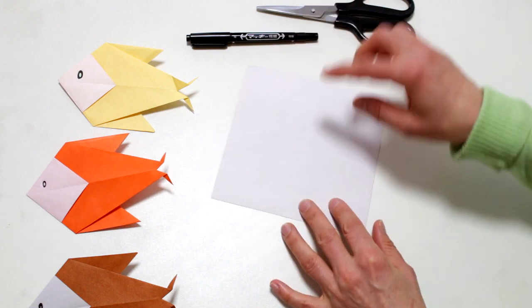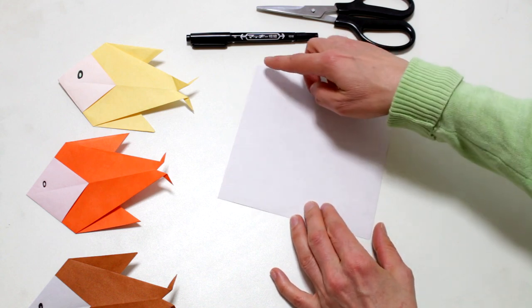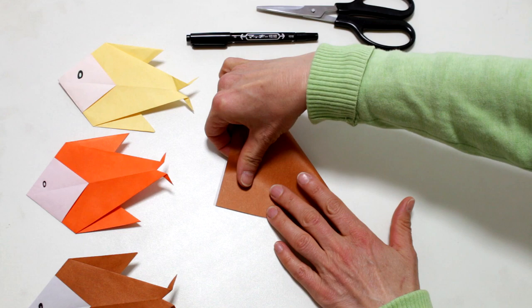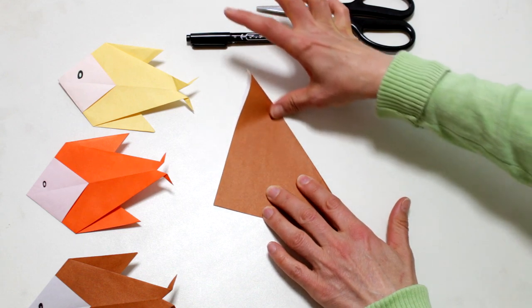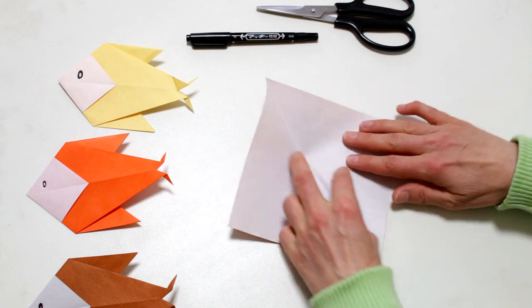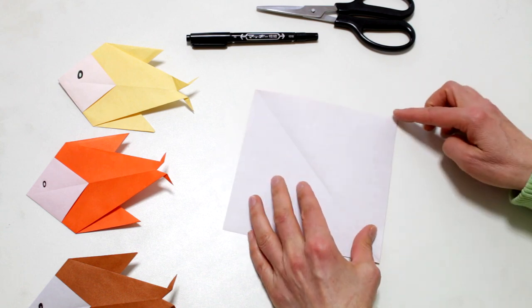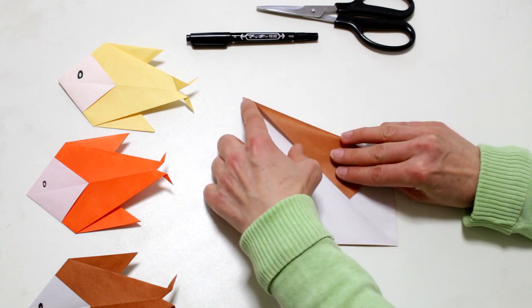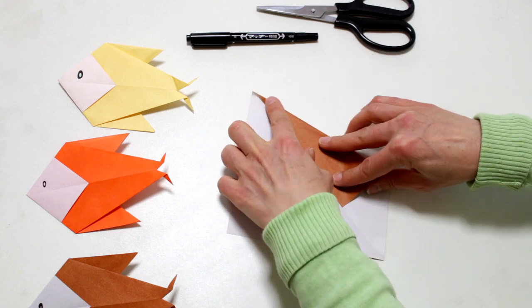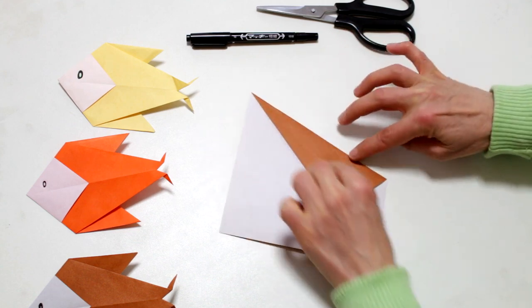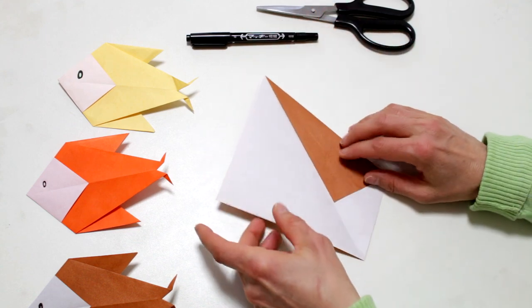We're going to start with the origami white side up and we're going to fold it in half diagonally. Crease and unfold and now we're going to bring this corner to the crease we've just created. And do the same for the left side.